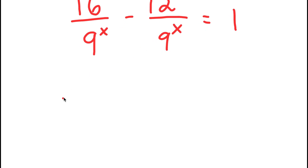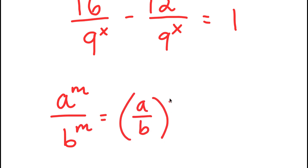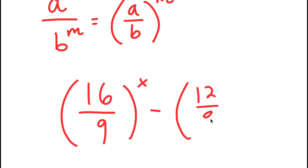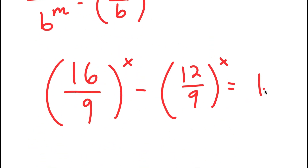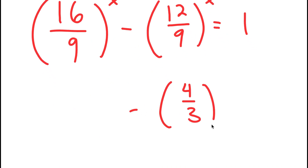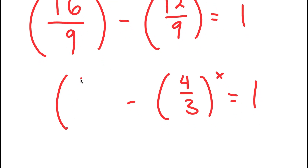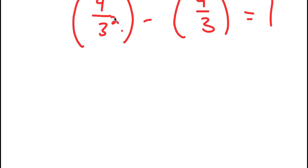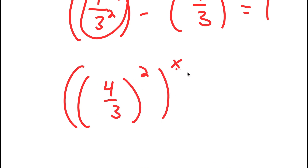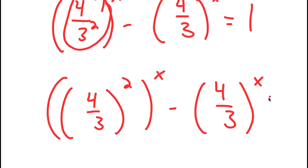Now, if I have something in the form a to the power of m over b to the power of m, this is equal to (a/b) to the power of m. So 16^x over 9^x equals (16/9)^x, and I have this minus (12/9)^x, which equals 1. Now 12 over 9 simplifies to 4 over 3, and 16 over 9 is the same thing as 4 squared over 3 squared. Using this property again, I get (4/3)^2 to the power of x, minus (4/3)^x, equals 1.